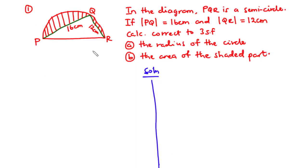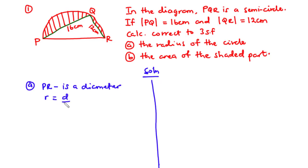From this diagram we have a semicircle with a triangle inside of it. To find the radius of the circle, we know that PR is a diameter. From circle theorems, the angle subtended by a diameter at the circumference of a circle is 90 degrees. Therefore the angle between PQ and QR is 90 degrees. We are going to use Pythagoras' theorem to find the distance PR, which is the diameter.